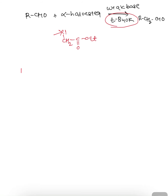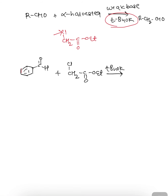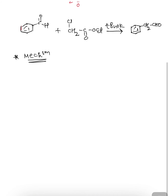Let us take one example and discuss the mechanism. Suppose we are taking benzaldehyde and reacting it with alpha halo ester CH₂Cl-COOEt in the presence of tertiary butoxide as a base. Then we will get an aldehyde with one carbon atom more than the original starting carbonyl compound.